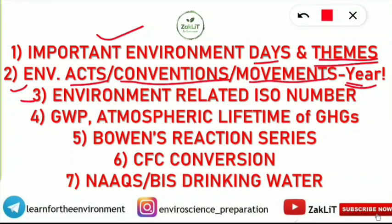The third topic is Environment-Related ISO Numbers — that is, International Organization of Standardization numbers related to the environment. This is also important and has already been discussed in the Telegram group, where a video was shared and a quiz was conducted. You can also check the easy trick to remember the ISO numbers via the link in the description.